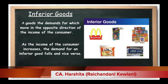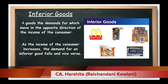Now, inferior goods. What happens with inferior goods? When the consumer's income increases, the demand for inferior goods shows an opposite relationship — an indirect or inverse relationship. A good whose demand moves in the opposite direction of the consumer's income is called an inferior good. As income increases, the demand for inferior goods falls or decreases, and vice versa. It is a negative relationship: with increasing income, demand for inferior goods decreases.